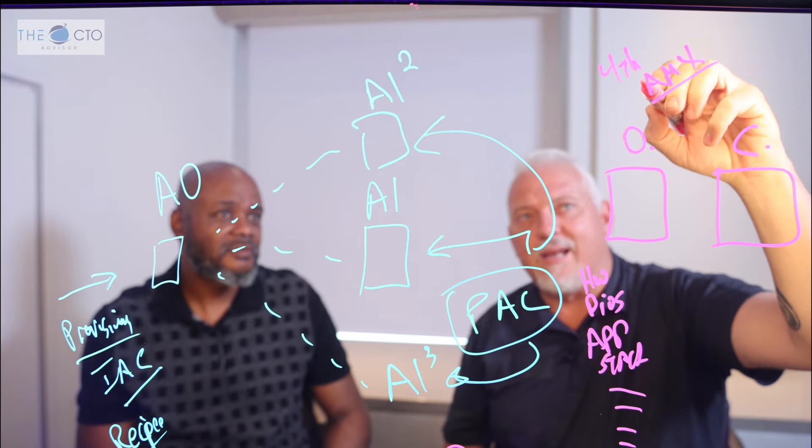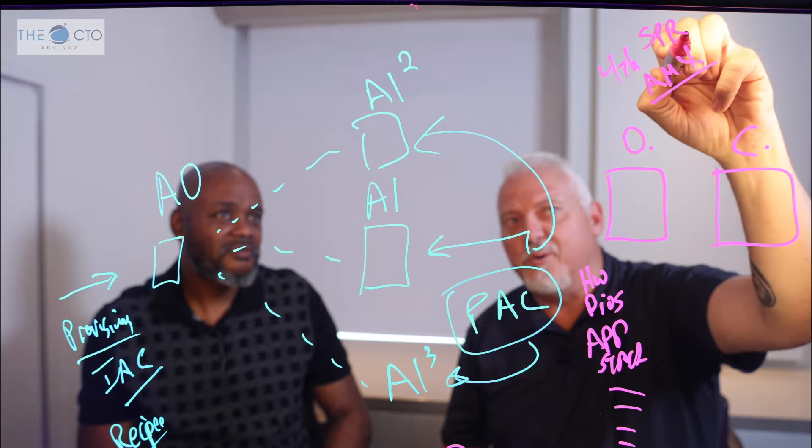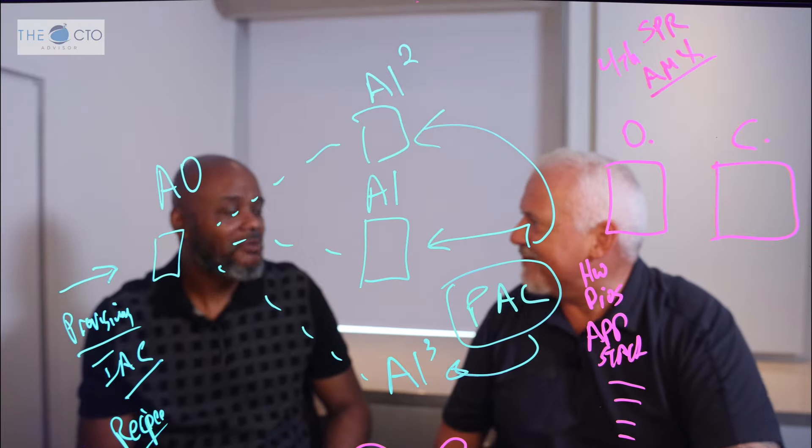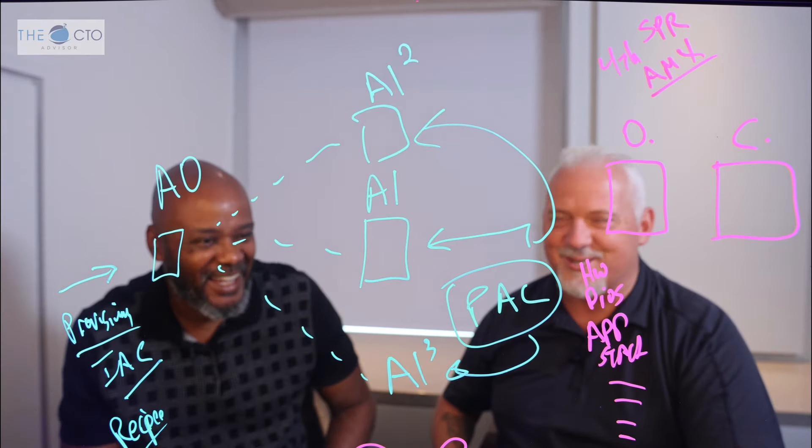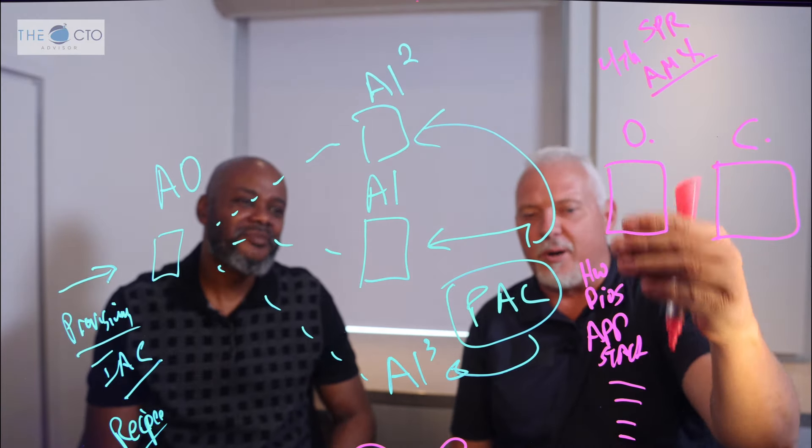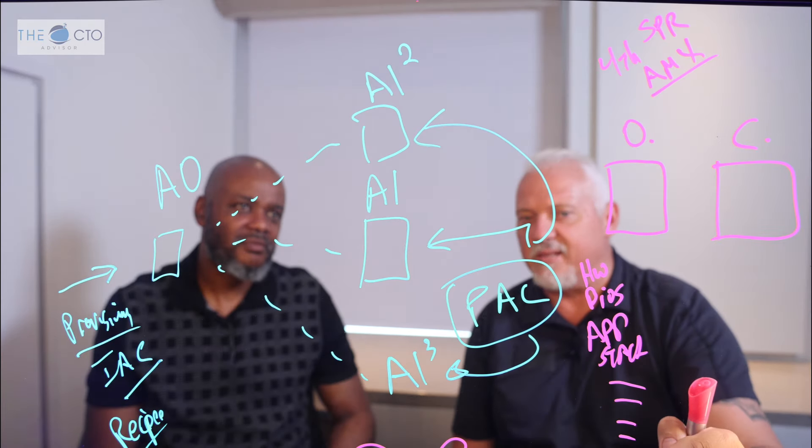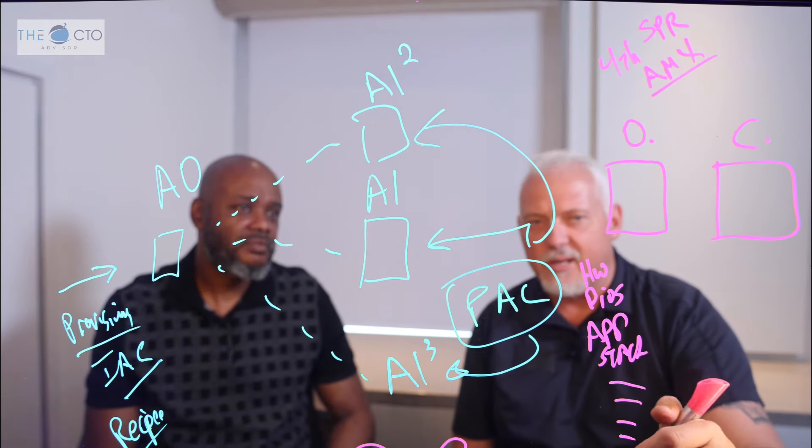And I could just put SPR to be cool, since we can still say that, Sapphire Rapids. So fourth gen Xeon scalable processor. So we got that on-prem, right? And I know my stack looks like this of how I need to operate it. The question is, okay, how do I take this recipe and easily apply it to the cloud?